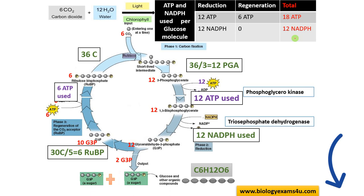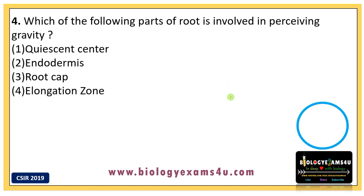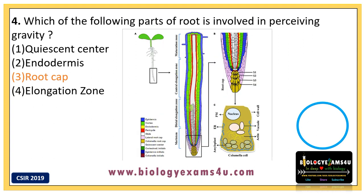You can find short summarized videos on almost all photosynthesis topics — the link is in the description below. Question four: Which part of the root is involved in perceiving gravity? Options are: one, quiescent center; two, endodermis; three, root cap; four, elongation zone. The answer is the root cap. This is actually an experiment conducted by Charles Darwin.